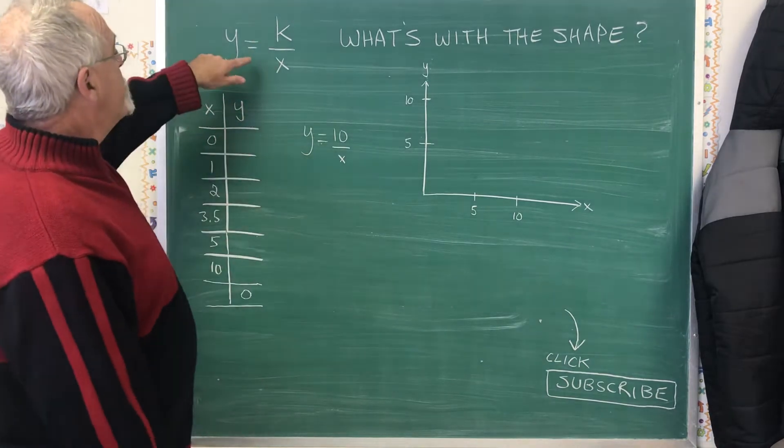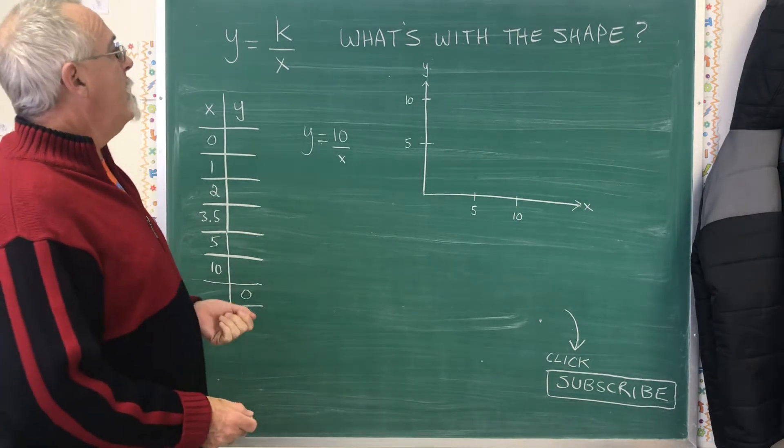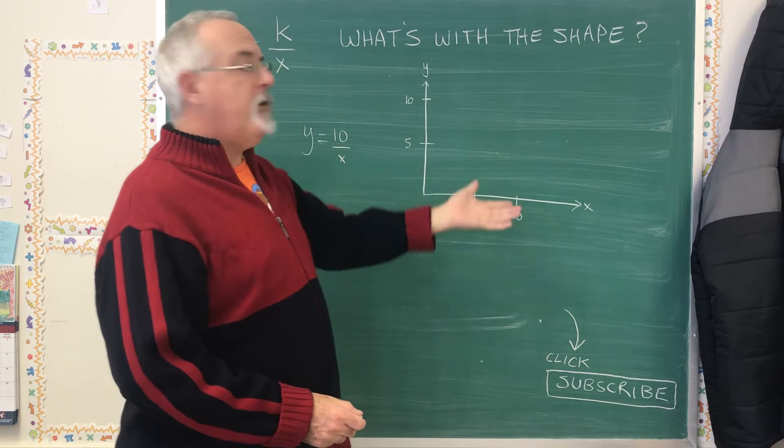With the inverse function, y equals k over x, where k is a number, why do we get this weird shape when we graph it?